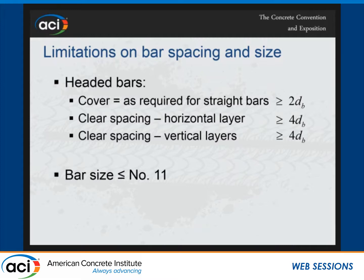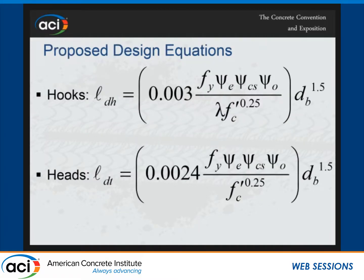Certainly there wasn't data when we developed the design procedures. These are the proposed design equations. Notice they look very much alike. The one difference is there's a lambda factor on hooks for lightweight concrete. We don't have any headed bar testing in lightweight concrete, so it's not permitted. But also notice the basic development length for heads is 80% of that of hooks — and that's real; that extra capacity is real. Now the development length is proportional to the bar diameter to the 1.5 power and inversely proportional to the compressive strength to the 0.25 power.